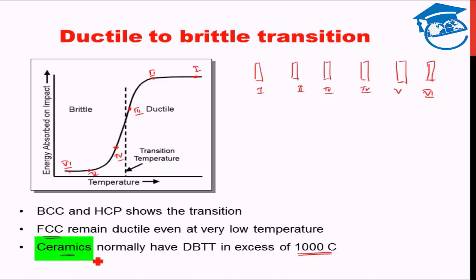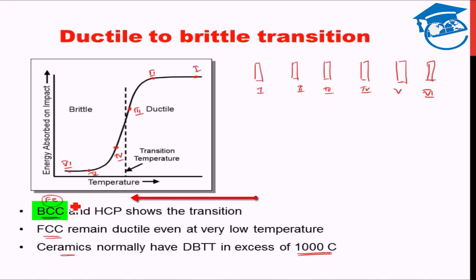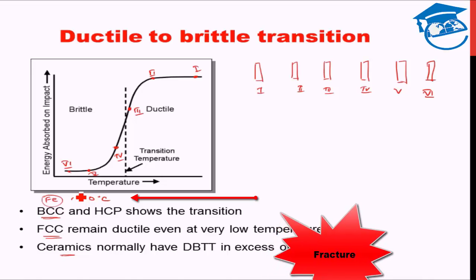That is why a ceramic bowl, if it falls, just breaks — and the break surface is shiny and perpendicular to the impact region. In the case of the Titanic, the steel used was of BCC type, and the ductile-to-brittle transition temperature for that steel — due to the presence of sulfur — was nearly 0 degrees Celsius. Since the water was cooler than that, it was below the transition temperature; the impact happened in the brittle zone and fracture occurred.